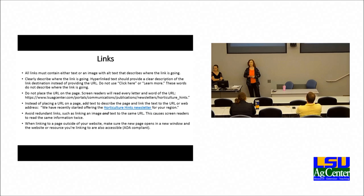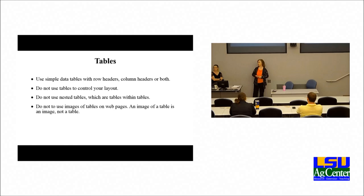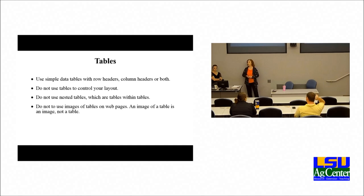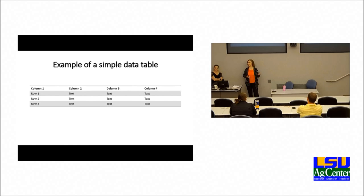Tables: you should use simple data tables with row headers, column headers, or both. Do not use tables to control your layout. Do not use nested tables — tables within tables. Do not use images of tables on web pages; an image of a table is an image, not a table. A simple data table has columns at the top and rows down the side — you can have just columns, just rows, or both.